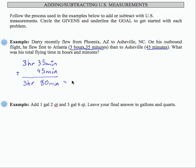However, three hours and 80 minutes, that's three hours plus 60 minutes plus 20 minutes, that's 80 minutes, but 60 minutes is one hour. So we have three hours plus one hour plus 20 minutes. That will give us four hours 20 minutes.